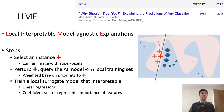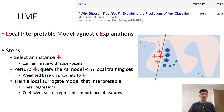LIME stands for Local Interpretable Model Agnostic Explanations. The original paper was published about five years ago, and it is very popular and very successful. The steps of applying LIME: first we need to select an instance of interest to interpret — for example, an image with superpixels as features. Then we need to perturb this instance by switching on and off some features and then query the underlying AI and machine learning models to generate a new set of labels for those perturbed instances.